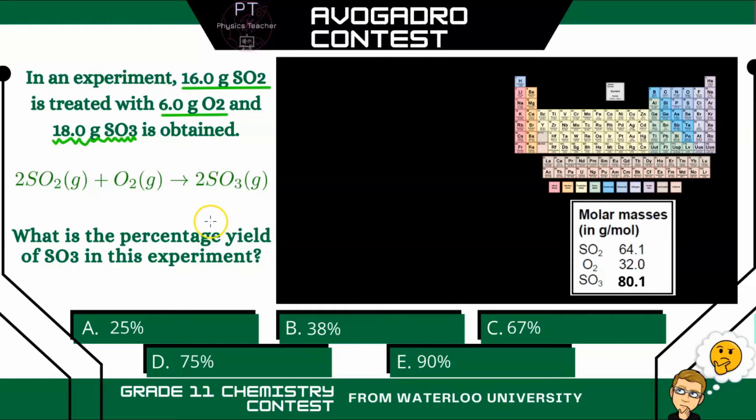All right, so first to determine the percentage yield. Percentage yield is just a comparison of the theoretical yield and the actual yield. So the actual yield, they tell us right here, we get 18 grams of SO3 from this experiment. So let's first determine what the theoretical yield would be.